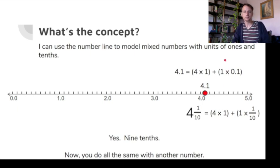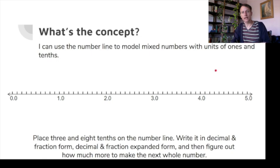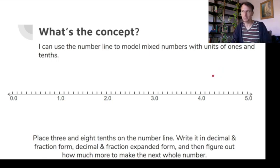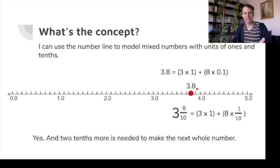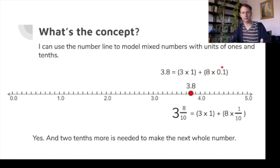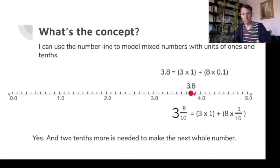Now let's place three and eight-tenths on the number line, write it in decimal and fraction form, write it in decimal and fraction expanded form, and figure out how much more is needed to reach the next whole number. Three and eight-tenths as a decimal is 3.8 — three in the ones place and eight in the tenths place.